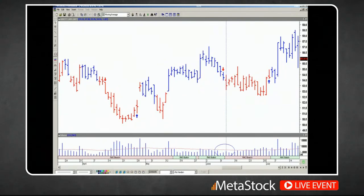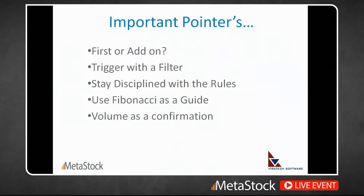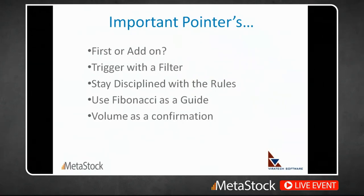An RMO first breakout is a pretty solid move — how can it happen without volume participation? So the important point: when you use the in-built Metastock template, focus on first breakouts. Trigger it with a filter — buy above the high, sell below the low. Stay disciplined with the rules. Place your stop at the swing high or swing low; if you can't find it, count back five bars. For those comfortable using Fibonacci, you can use Fibonacci retracements also as a guide. Finally, use volume as a confirmation: whenever you get a first breakout buy or sell, check that at least plus or minus two bars around the signal have at least 10 to 20% above average volumes, so you know the signal is qualified and you're not just getting a signal in a sideways zone.